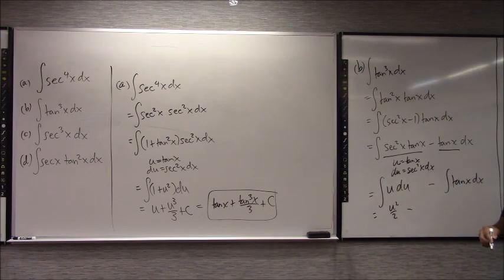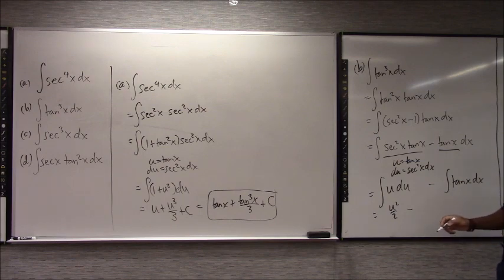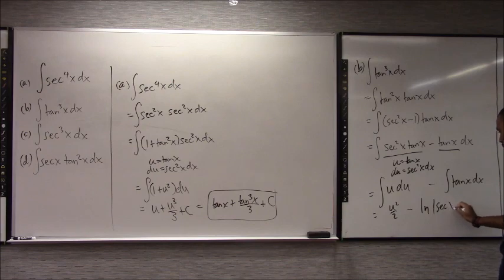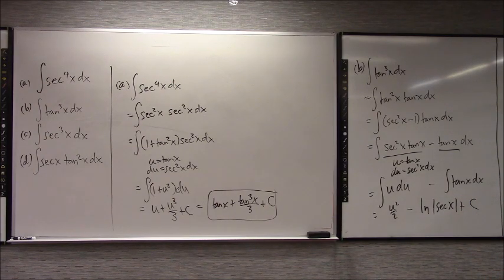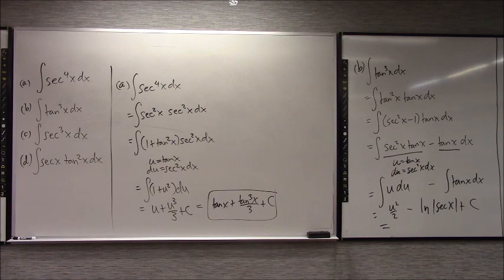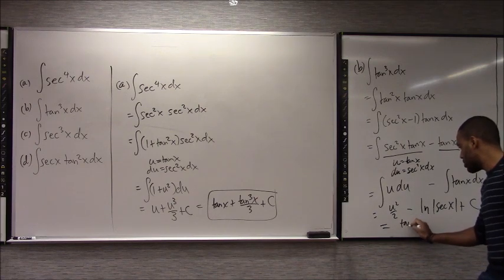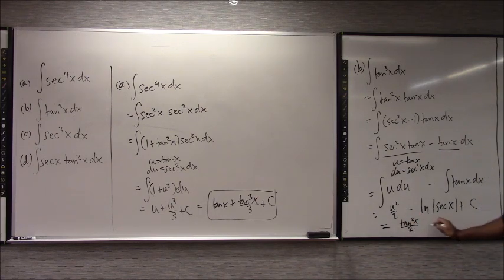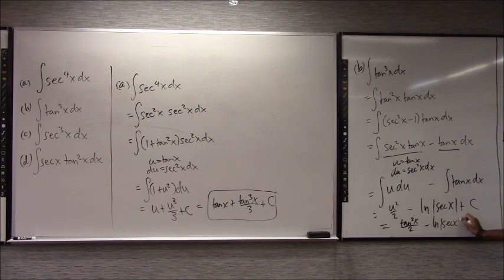U equals tangent seems like less work, so I'll go with that. So that is just the integral of u du, where u is tangent, minus separately the integral of tangent. This is u squared over 2 minus the integral of tangent, which is ln of secant. So: tangent squared over 2 minus ln of secant x plus C. That should be memorized and known immediately.